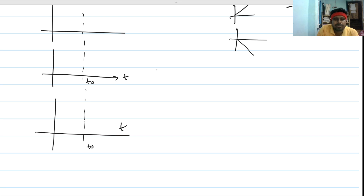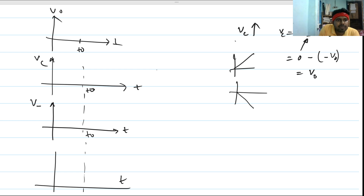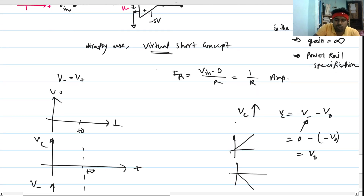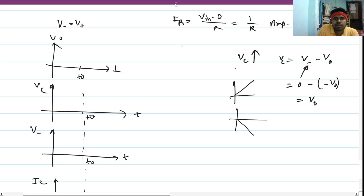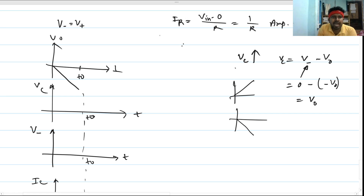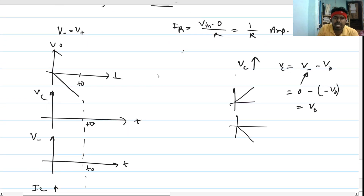Let's set up the waveform axes. We have V_out, V_C, V_minus, and I_C. The output voltage ramps negatively, and when it reaches minus 5 volts at t equals t_0, it becomes saturated and stays at minus 5 volts, since the op-amp output cannot exceed the supply rails of plus or minus 5 volts.